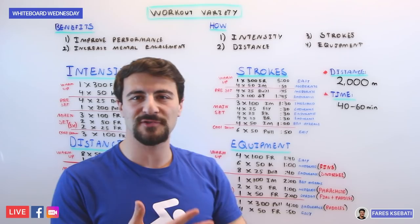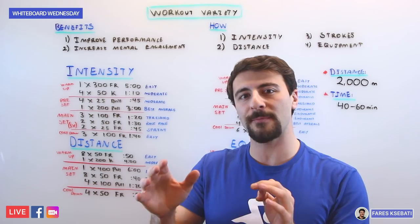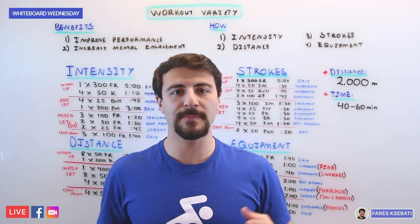Now on the board I have four different workouts, and each workout is 2,000 meters. Each of these workouts takes anywhere from 40 to 60 minutes to complete, but most importantly they're all the same quantitative distance of 2,000 meters, but the qualitative difference is quite striking.